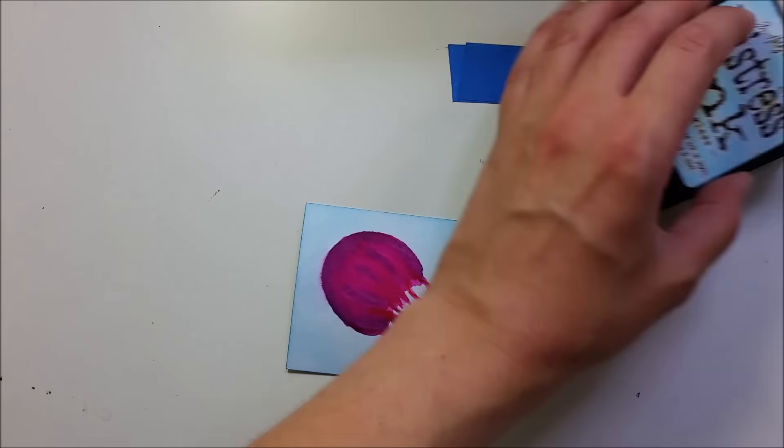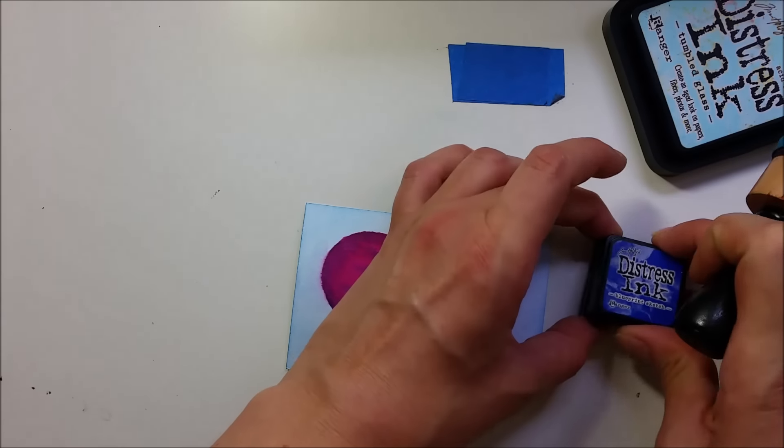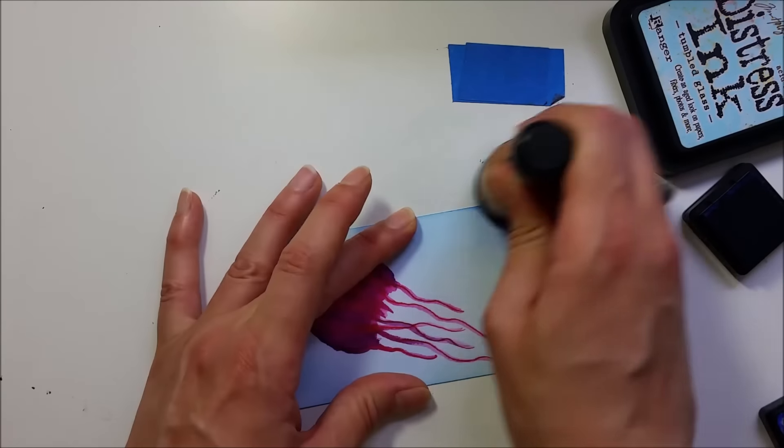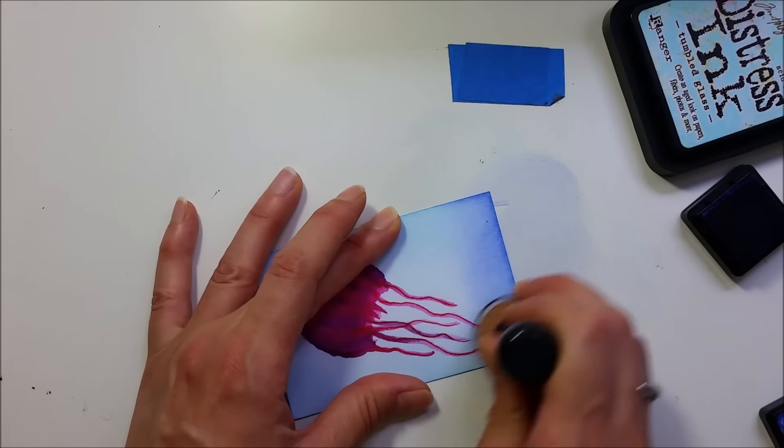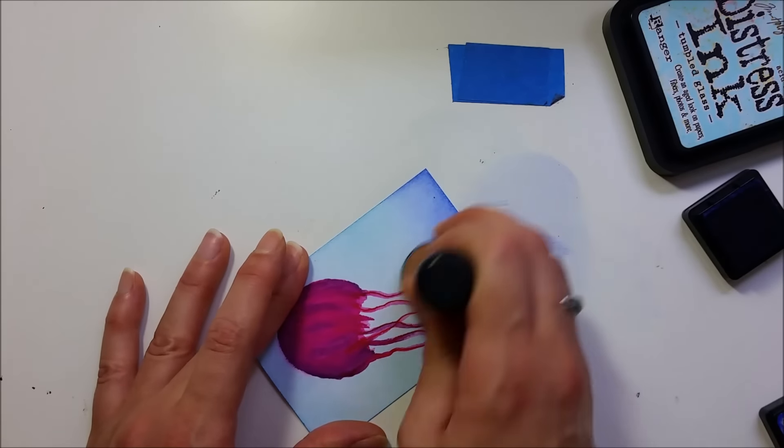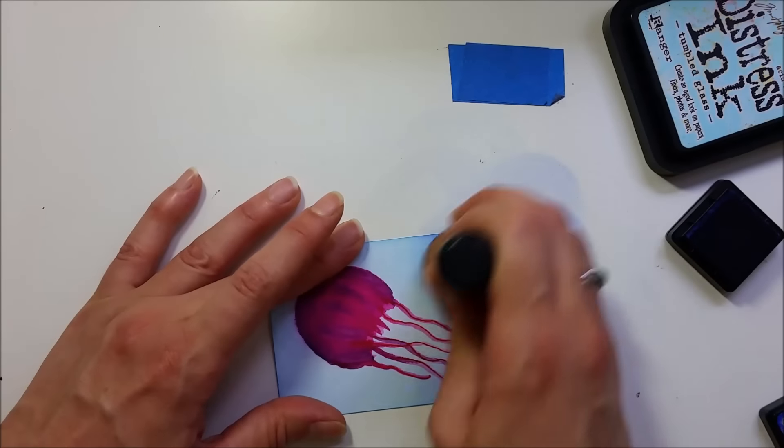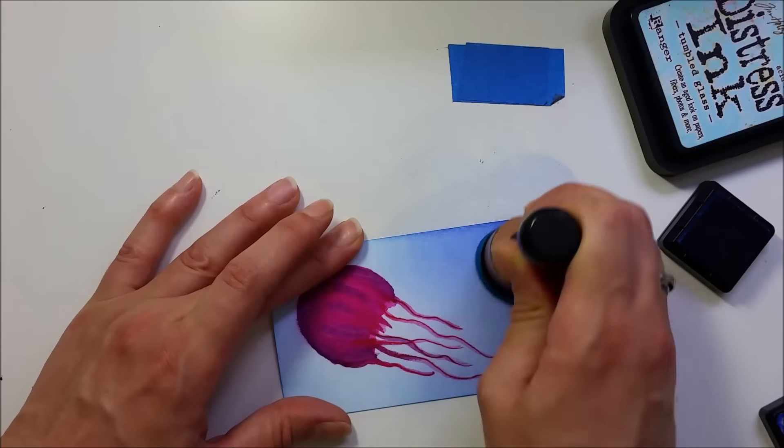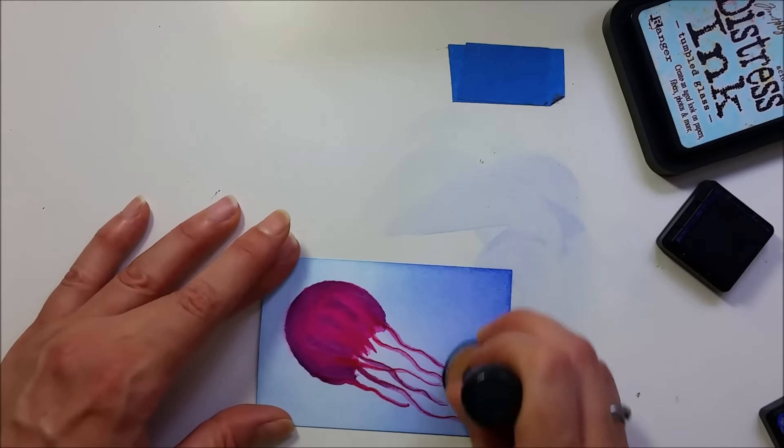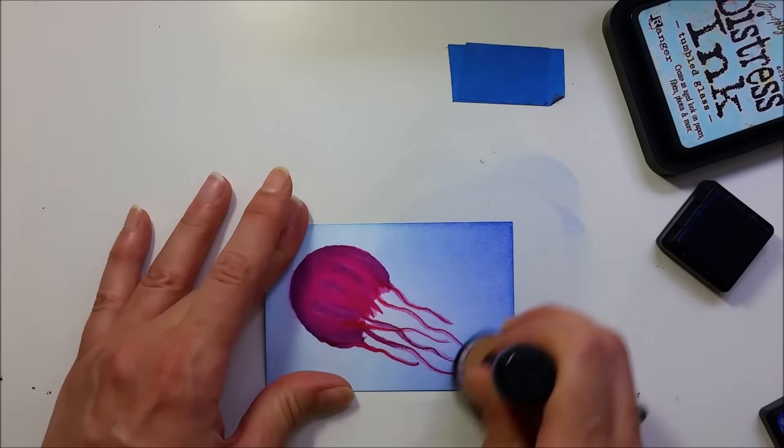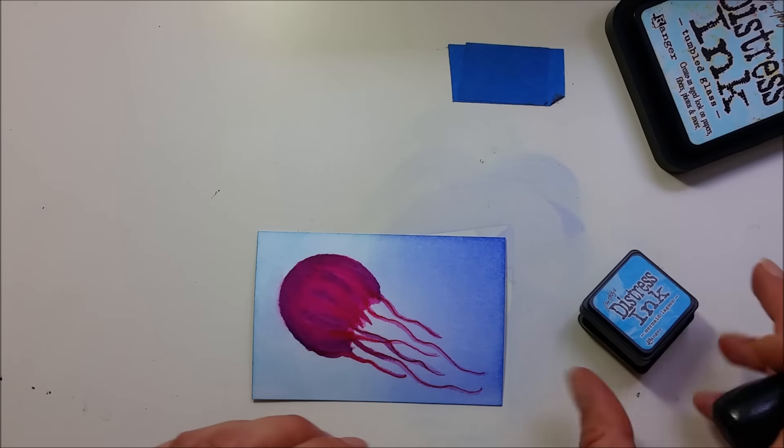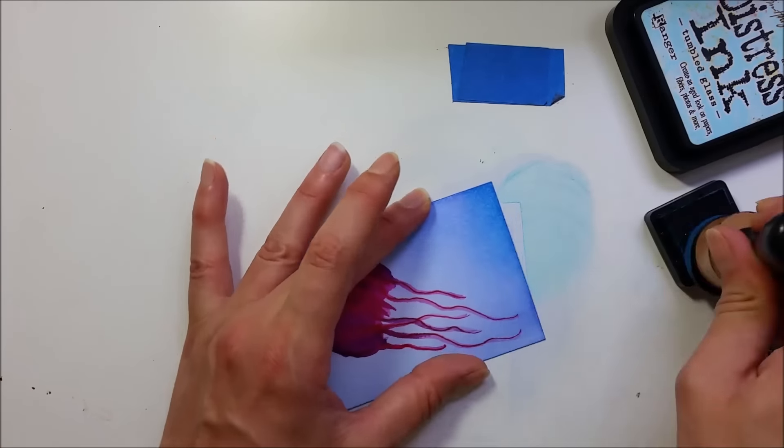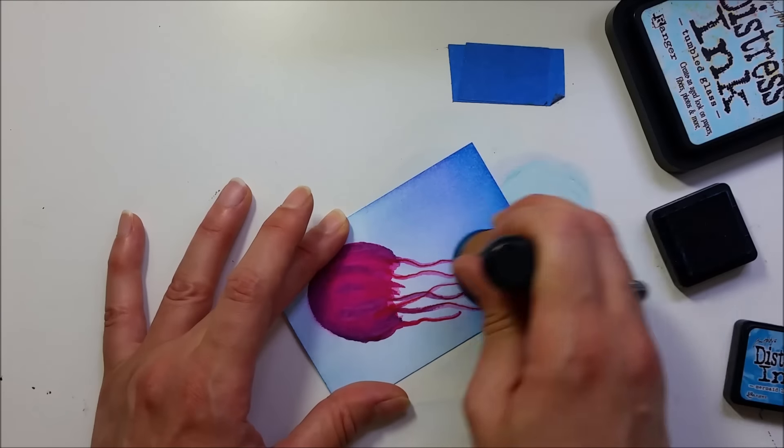So to darken this up a bit I'm gonna bring in the blueprint sketch. And this is a purplish blue, so I think I'm gonna pick another color that's more of a blue. And I'm gonna go with the mermaid lagoon, and this is a much more intense blue.